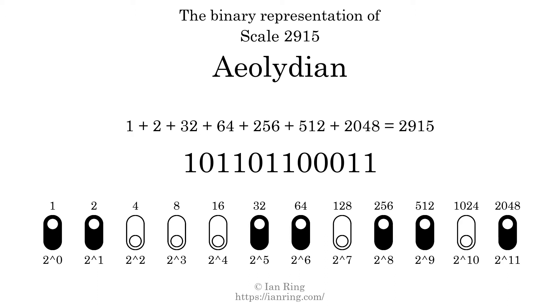The scale number in binary is: 1, 0, 1, 1, 0, 1, 1, 0, 0, 0, 0, 1, 1.